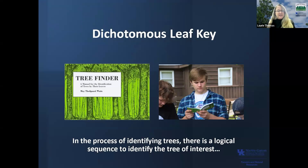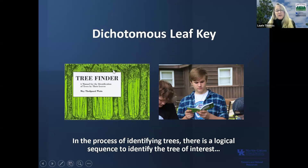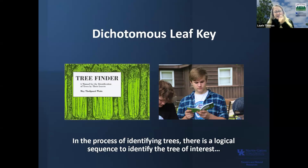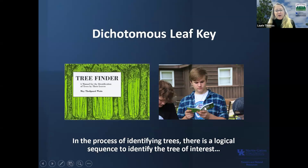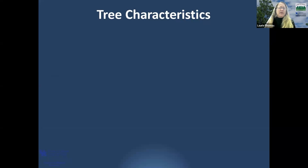The process of identifying trees can be very logical, and there's a sequence to it. A dichotomous key is used for all kinds of organisms. I'm going to talk about this little tool called the Tree Finder — it is a dichotomous leaf key, so it looks at the leaves of the tree, asks you questions, and you look at characteristics, answer those questions, and move on to the next set. These are great little tools, about five dollars apiece, pocket-sized, with about 70–75 different species covering the eastern half of the United States.